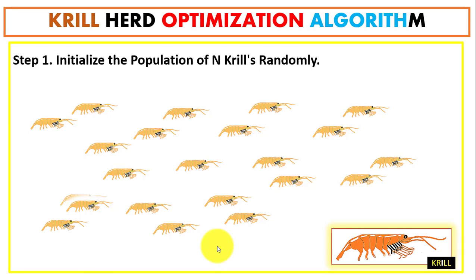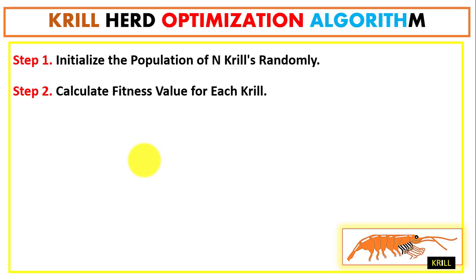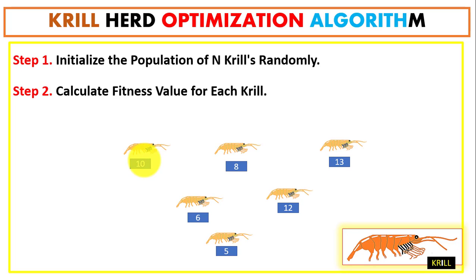In step 1, we initialize a population of N krills randomly. We also initialize the required parameters such as foraging speed, maximum diffusion speed, and maximum induced speed, setting values for all parameters.